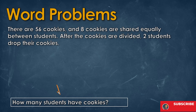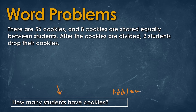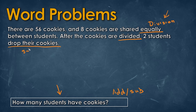We start by looking at what the question is asking — how many students have cookies. As we read the word problem, we see the word 'equally,' which means division, and that will be the first step. It then says two students drop their cookies, which tells us we're going to be doing subtraction, so the second step will be subtraction.